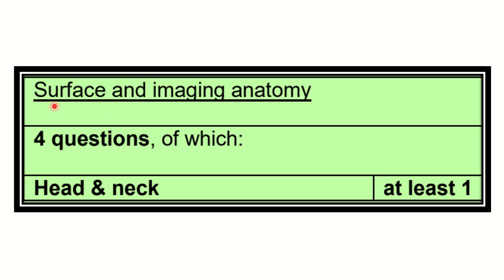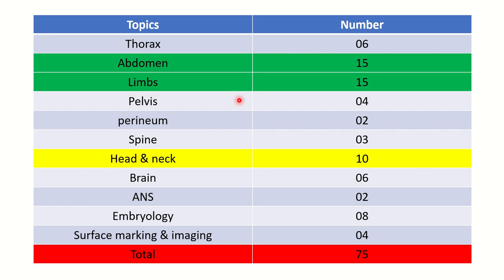In the last part, surface and imaging anatomy contributes 4 questions, and among them one must be from the head and neck area. These imaging and surface anatomy questions are quite easy — they may identify bony prominences, muscles, or foramina — so don't be upset, these questions are very easy.